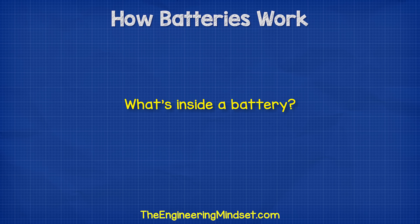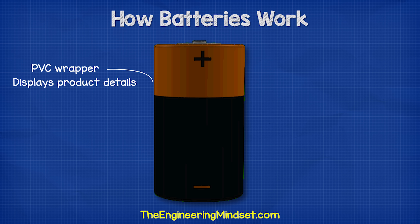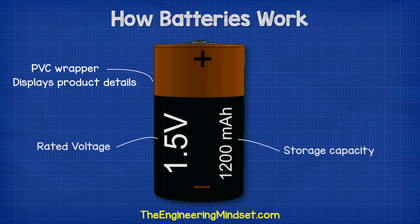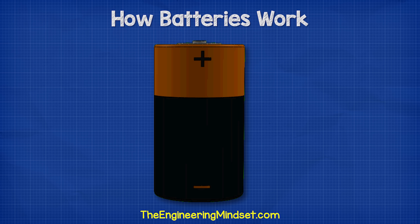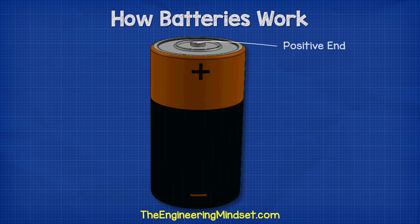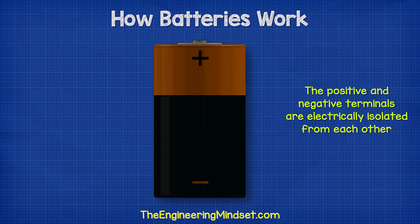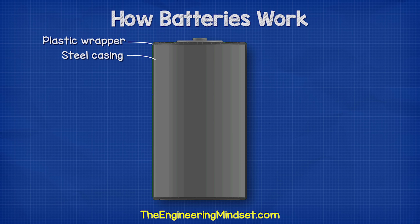A typical 1.5 volt alkaline battery looks something like this, though colors will vary by manufacturer. When we look at a battery we usually have a plastic wrapper fitted tightly to the outside. This insulates the battery but also tells us important information such as the capacity, the voltage, and which end is positive and negative. The positive end is known as the cathode and has an extended surface that protrudes outwards. The negative end is known as the anode. These two terminals are electrically isolated from each other.